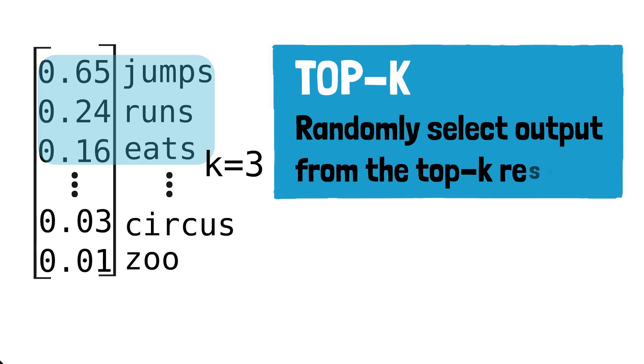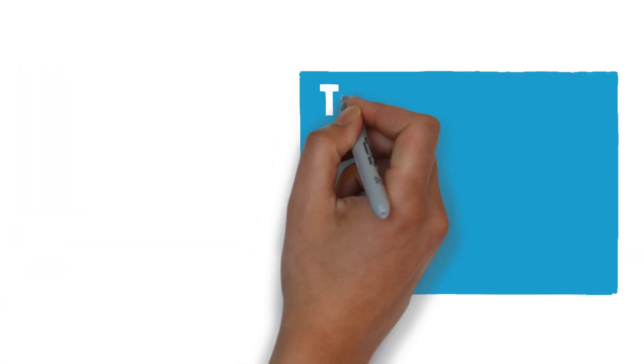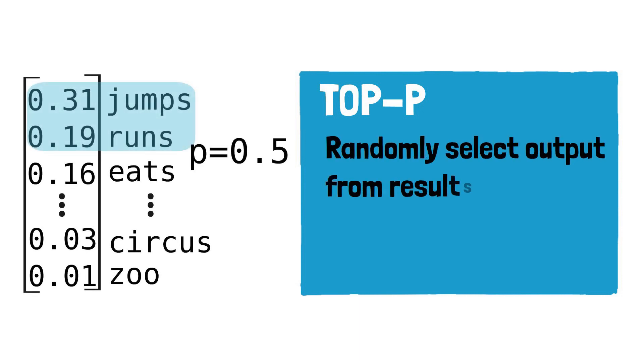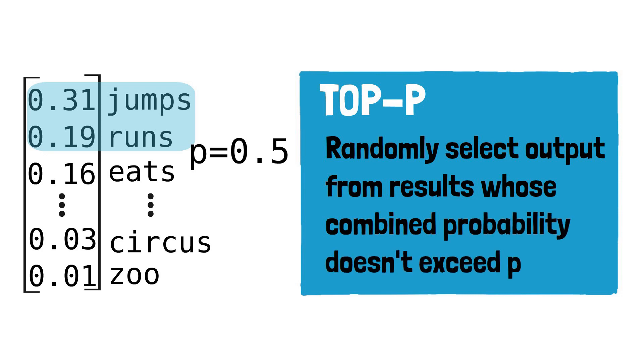This ensures a balance between predictability and randomness. Alternatively, one could use the top-P sampling strategy. Here we sample from the top predictions whose combined probability does not exceed the value P.